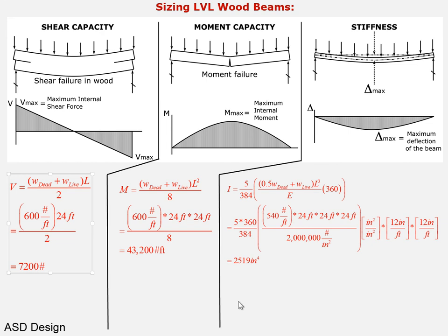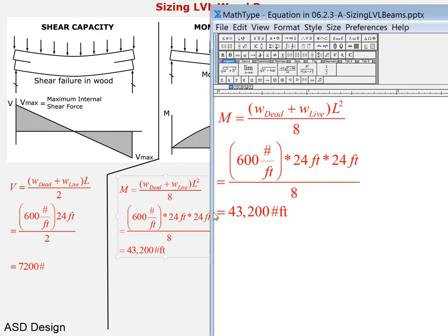So before remember we had area, section modulus, moment of inertia. Area was in inches squared, section modulus was in inches cubed, moment of inertia was in inches to the fourth. Now the equations have been adjusted because we're no longer even bothering with the area. We're just calculating the maximum shear force that we have to have a member resist, the maximum moment that the member has to resist, and then we're going to go find a member that will do all these things.